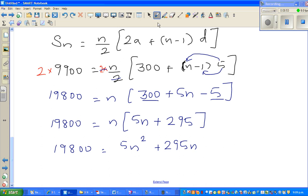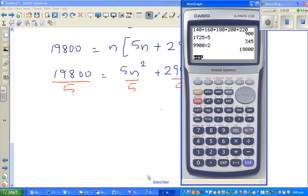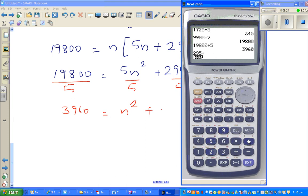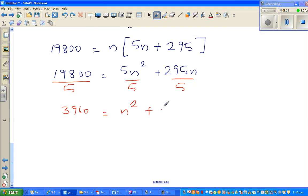Now which number goes into all three terms? 5 goes into all of them. I am going to divide all by 5 to make this much simpler. 19800 divided by 5 is 3960, so 3960 equals n squared plus (295 divided by 5 which is) 59n. Now this has become a quadratic equation: n squared plus 59n minus 3960 equals 0.